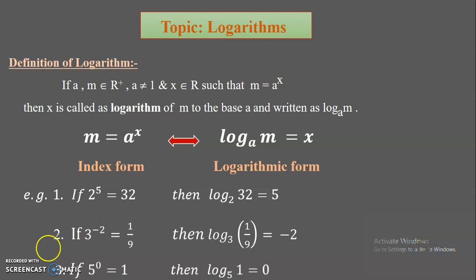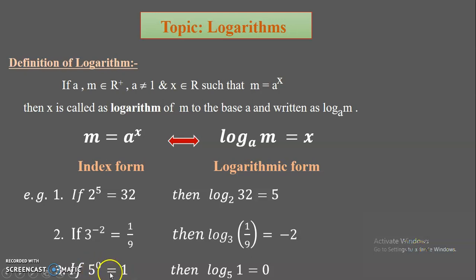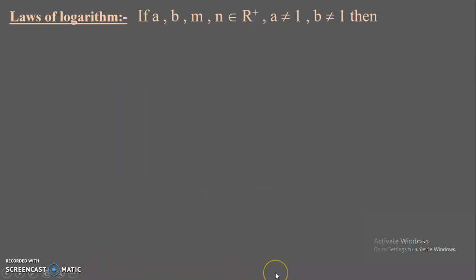One more example: 5 raised to 0 equals 1 — this is the rule of indices, anything raised to 0 is 1. So its logarithmic form will be log of 1 to the base 5 equals 0.